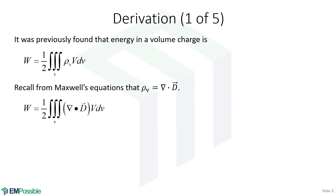For Maxwell's equations, we have Gauss's law, which says the divergence of the electric flux density D equals the volume charge density ρ_v. So let's replace the volume charge density with ∇·D, and that's where we are here.